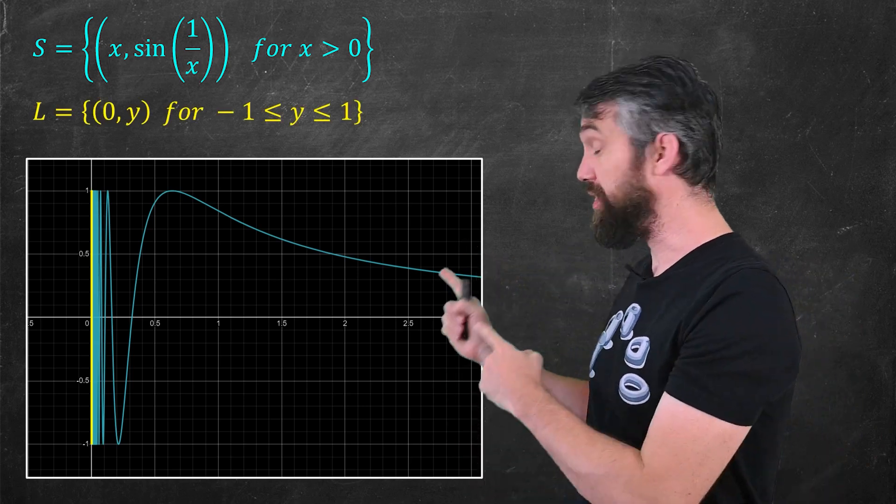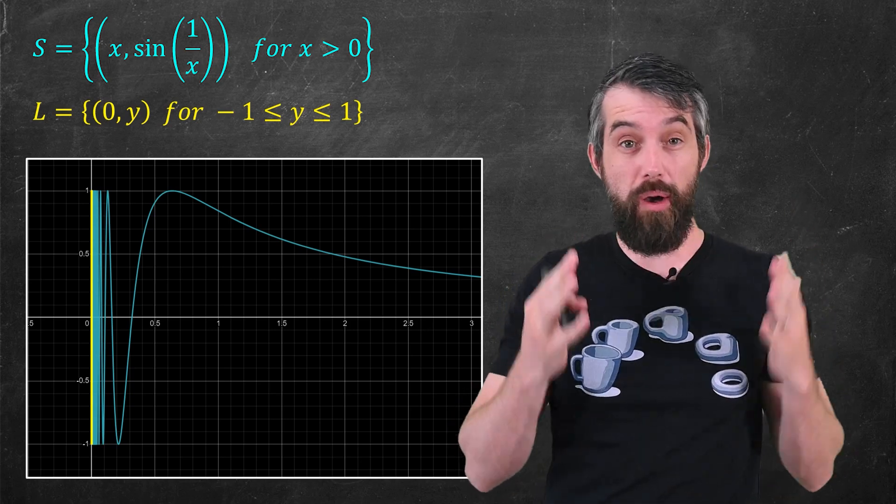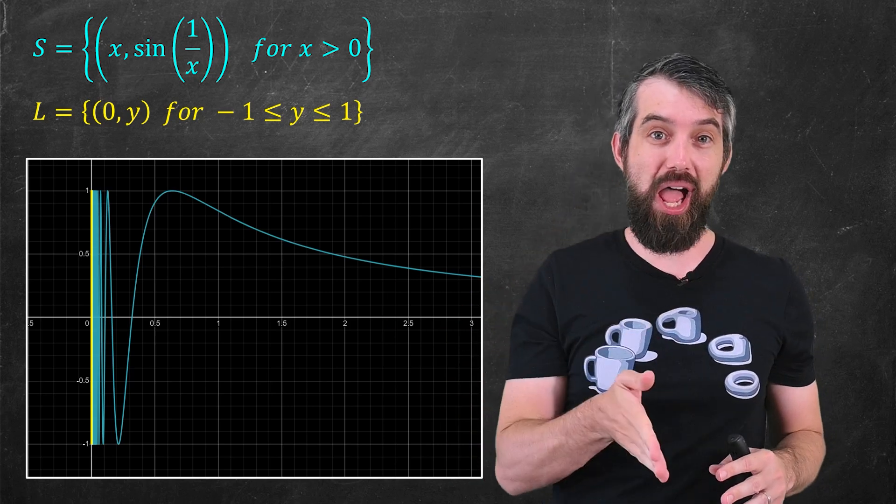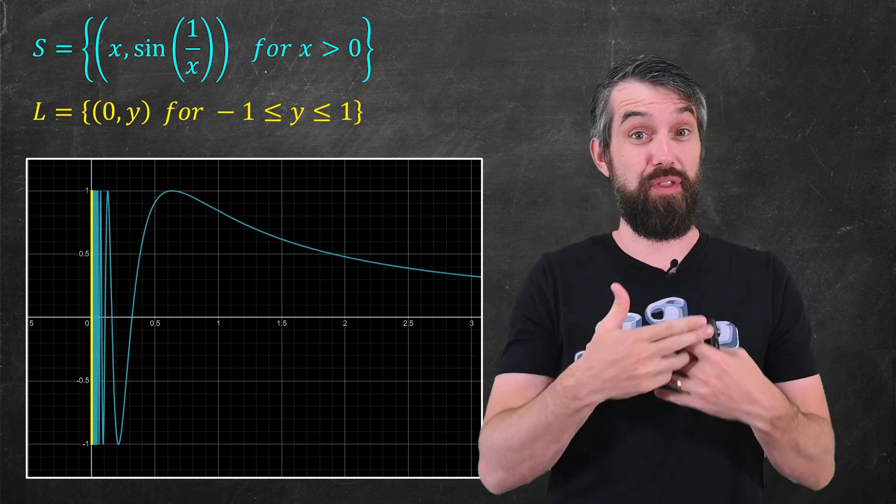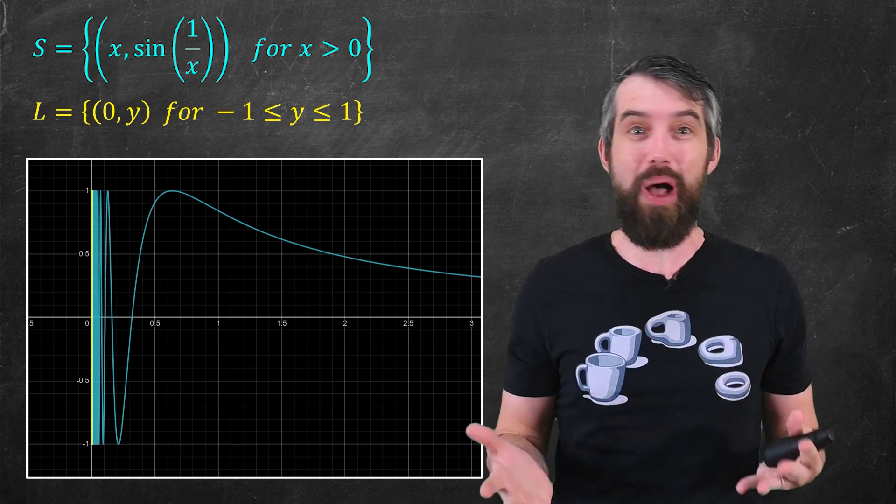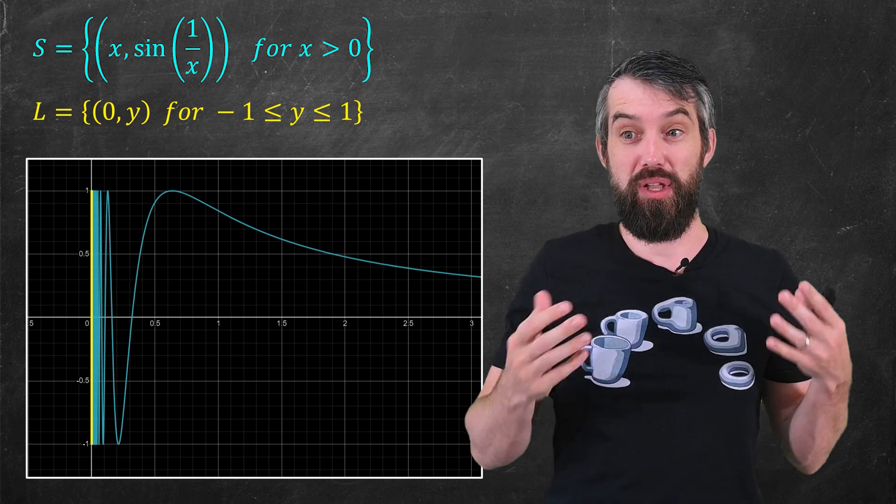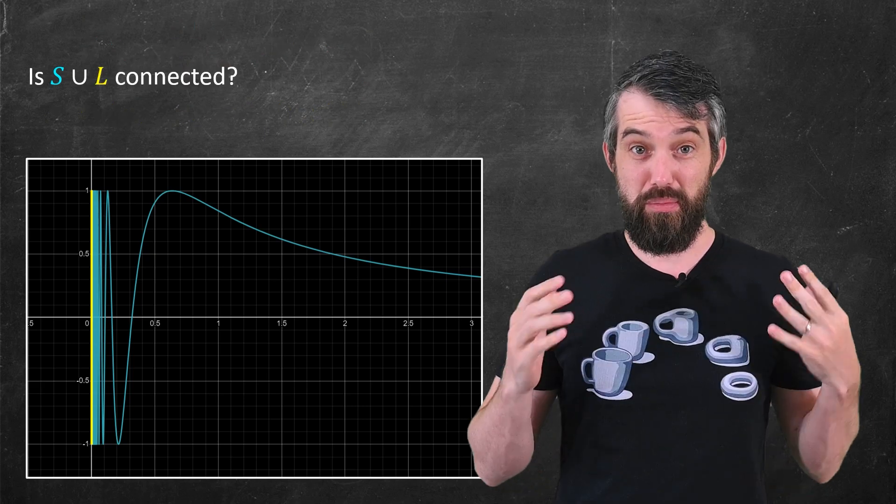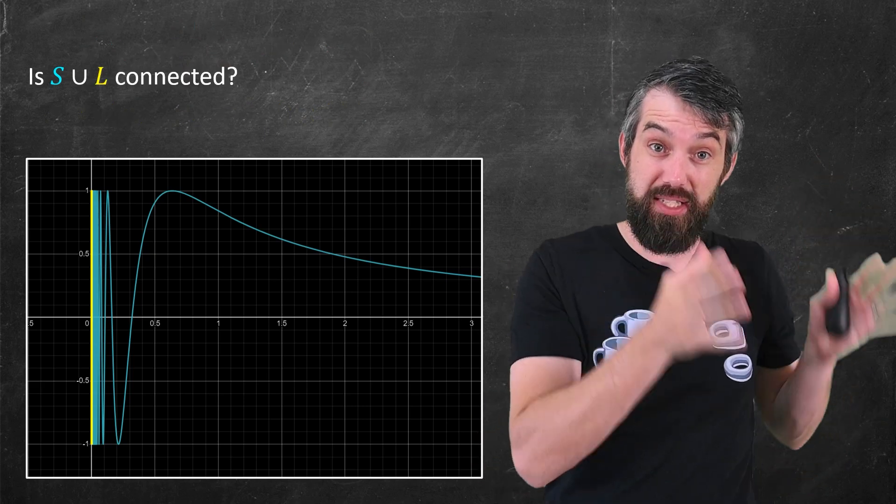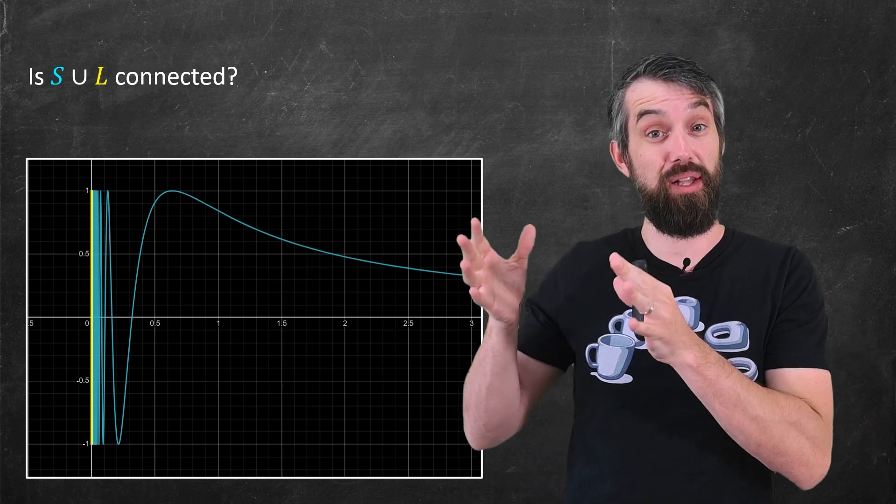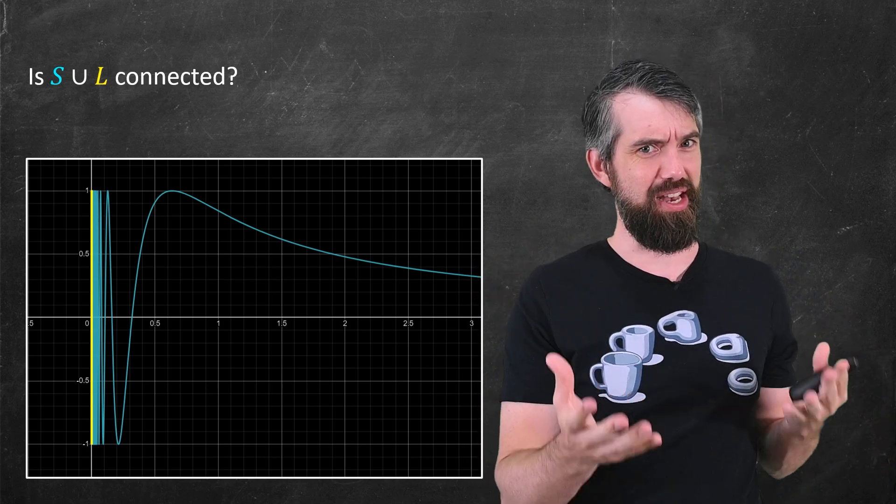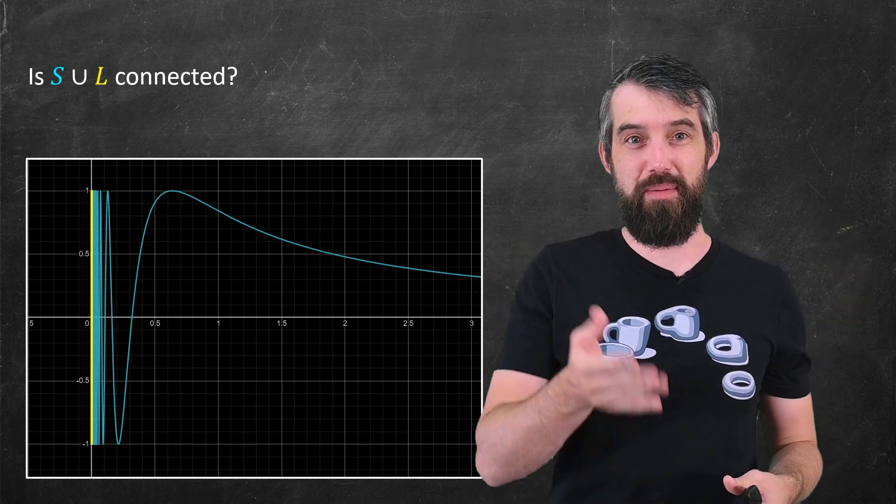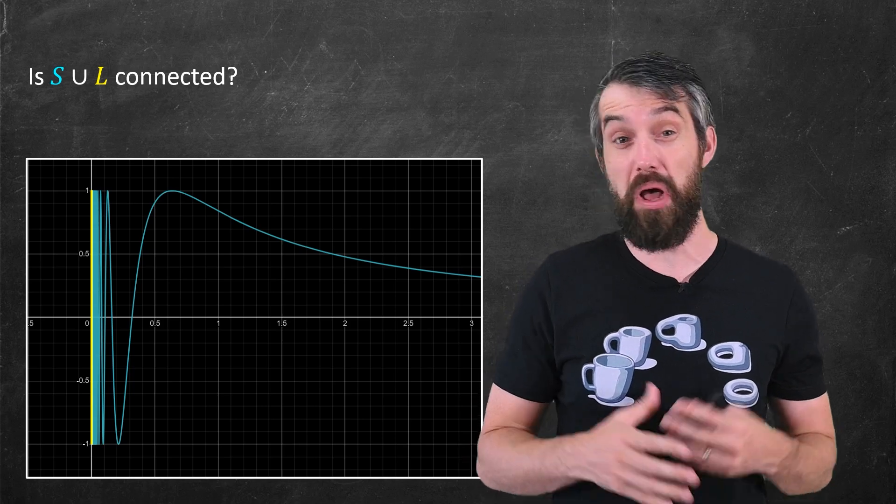Now, I want to add to my graph this line. This is the line of all points on the y-axis between y values of minus 1 and 1. Note that the sine curve and the line are disjoint. For the sine curve, we were demanding that x is always positive. For the line, x is always equal to 0. So these are disjoint sets. So now my question is, what about the union of these two things? The sine curve union the line. What is this? Is this connected? Is this disconnected? This business of this infinite oscillation makes perhaps the answer to this question a little bit unclear.